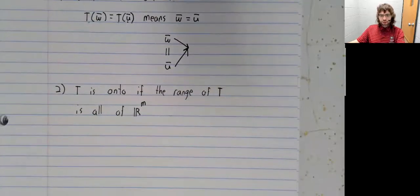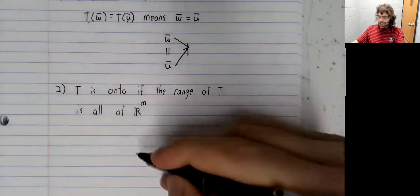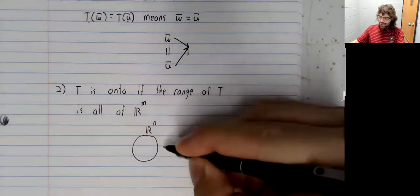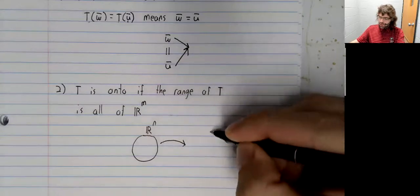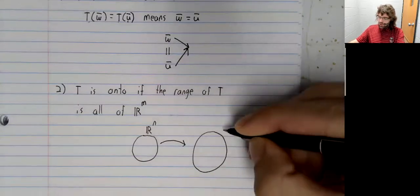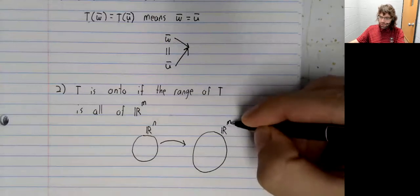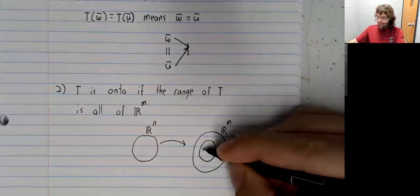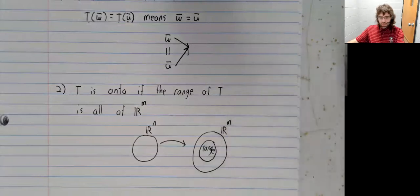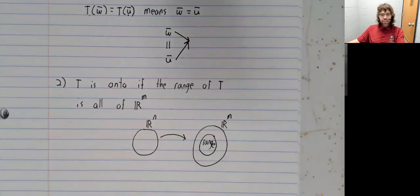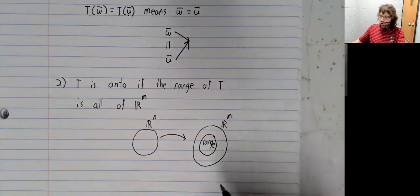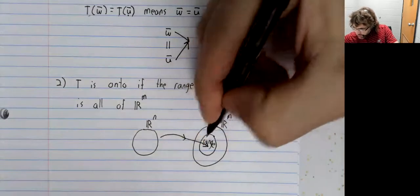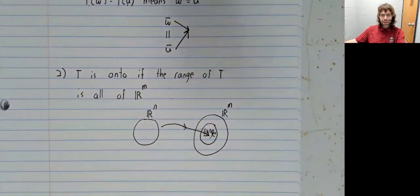So for a given transformation from R^N to R^M, the range of the transformation is a subset sitting in R^M. These are the vectors that actually get mapped to.